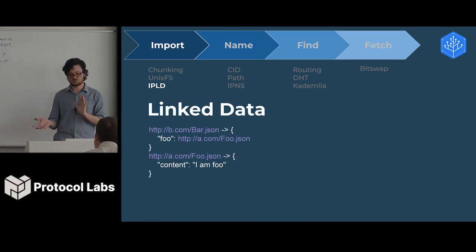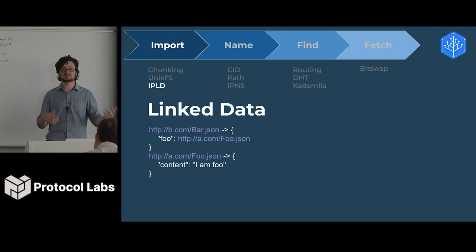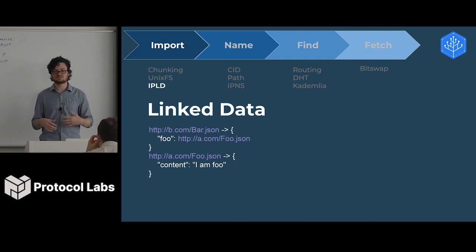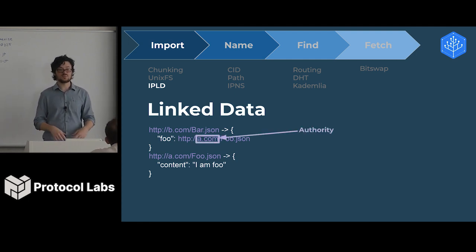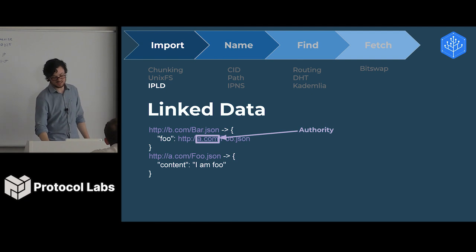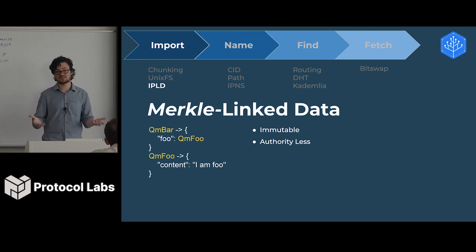To dive in a bit more: the name comes from Interplanetary Linked Data. If you're familiar with linked data — originally JSON-LD — the original concept was to use URLs, where a JSON object could point to another JSON object using a URL. The problem with URLs is they have an authority that can change what they point to. We don't want to trust anyone. So IPLD uses hashes instead — you just include the hash, and it points to another object. It's also immutable because it's hashed.